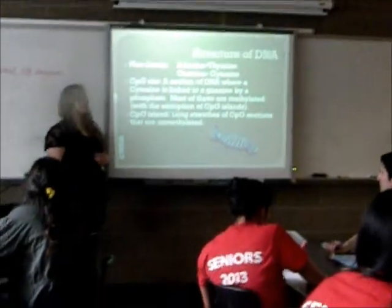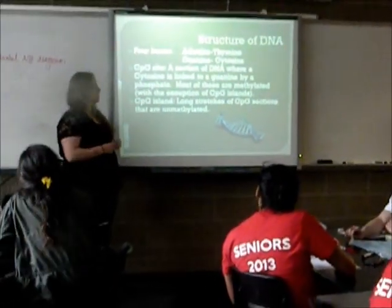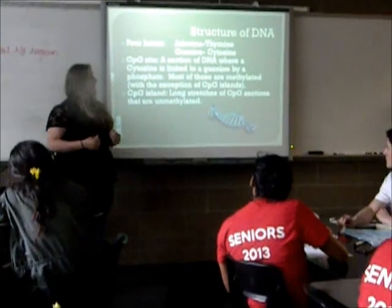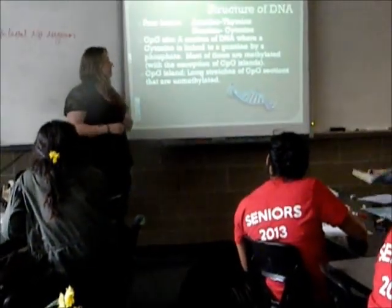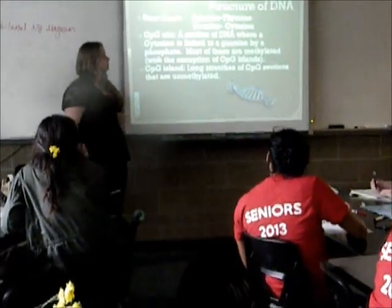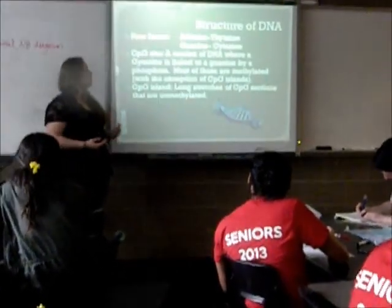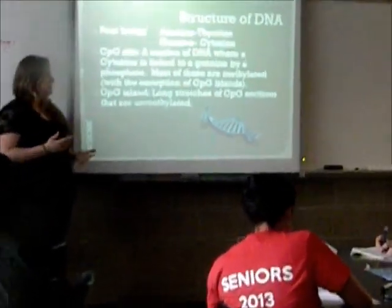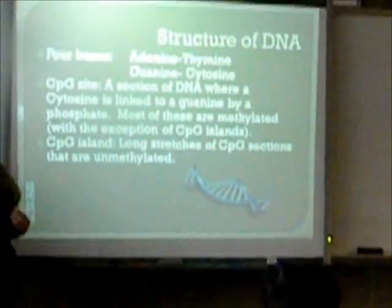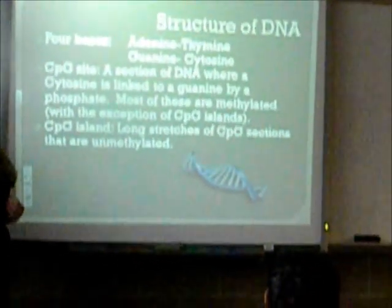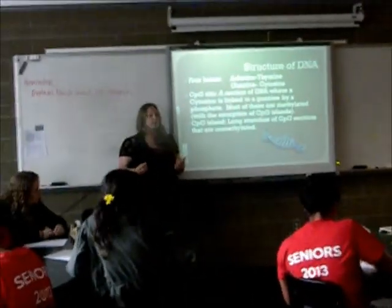Let's start with a quick review of the structure of DNA. There are the four bases: adenine, thymine, guanine, and cytosine. You'll remember they always pair. An important thing in methylation is the CpG site, which is a section of DNA where the cytosine is linked to a guanine 5-phosphate.